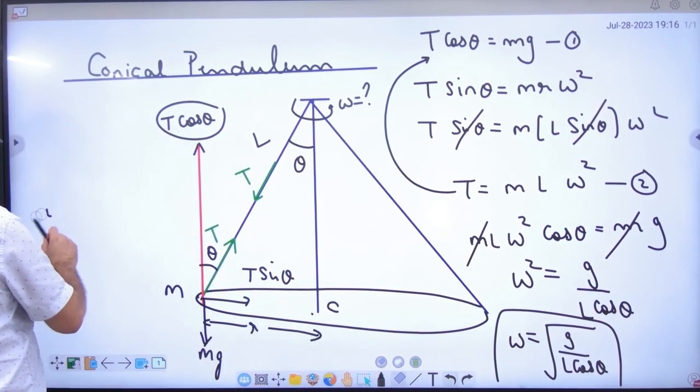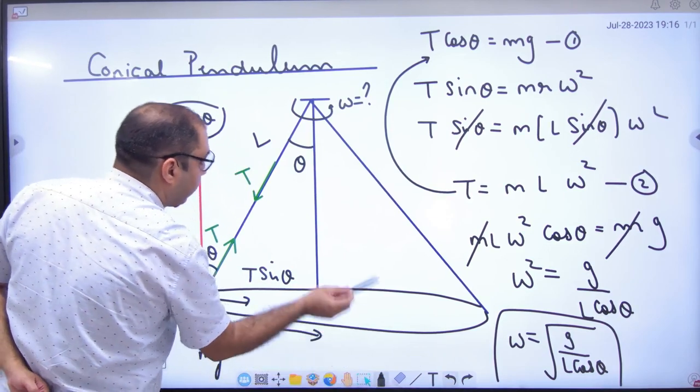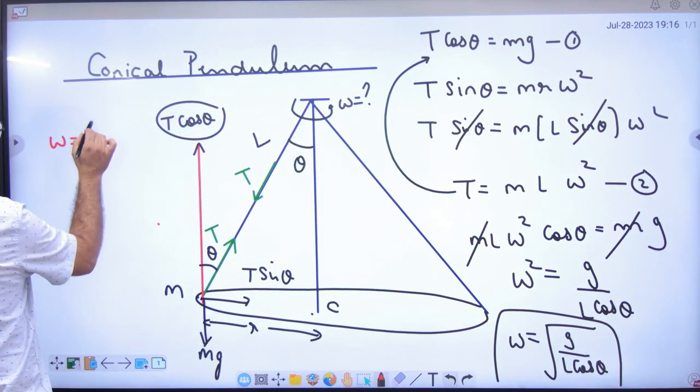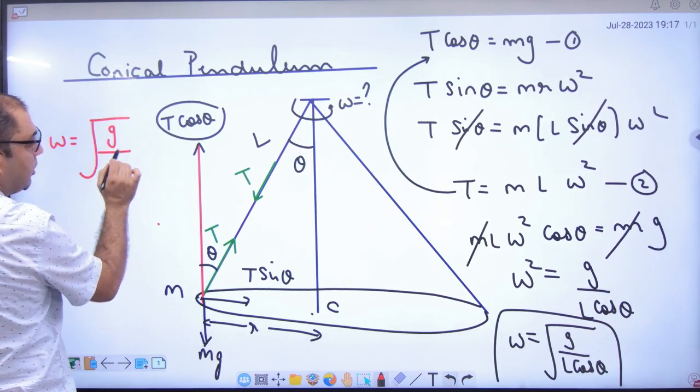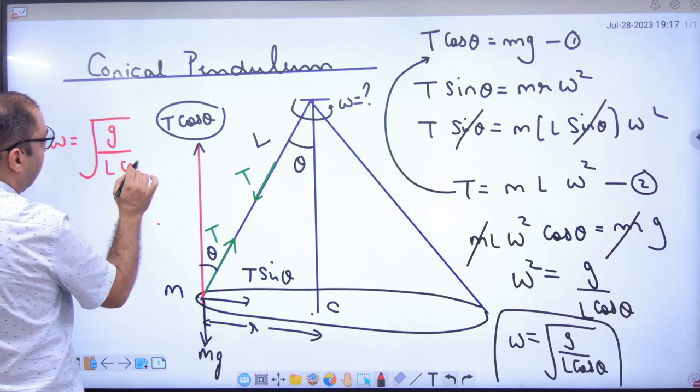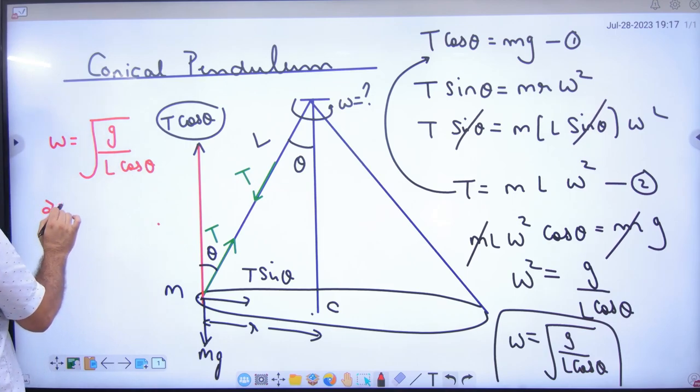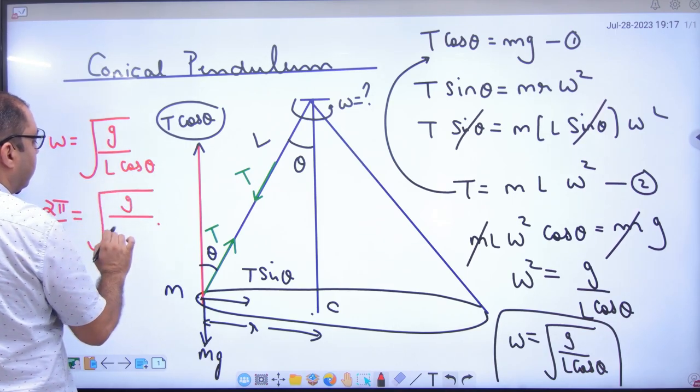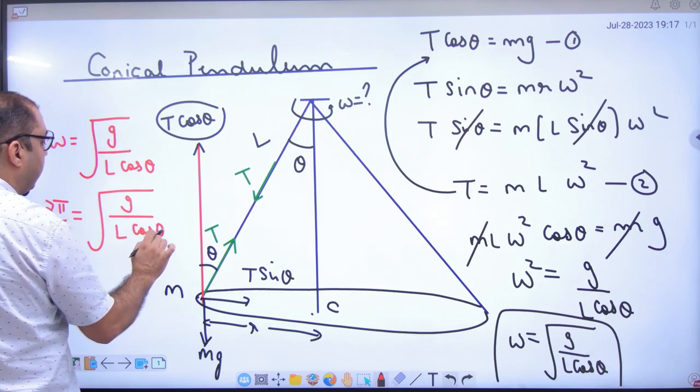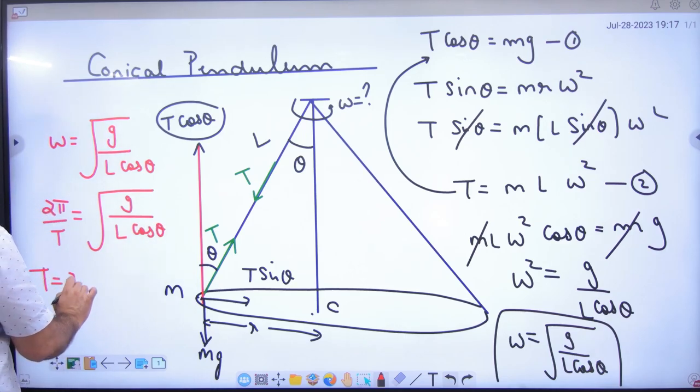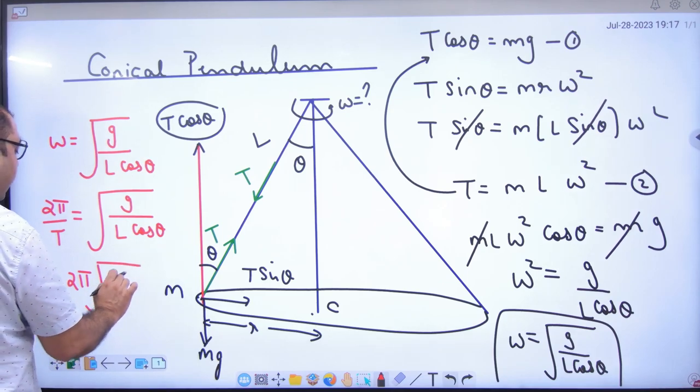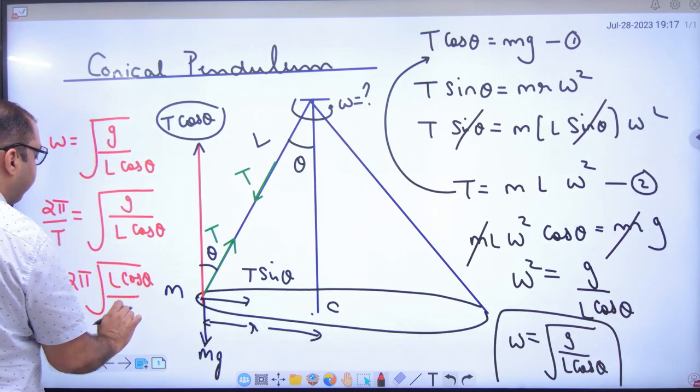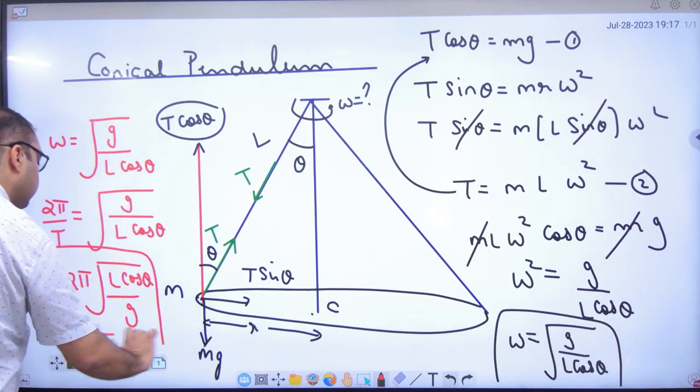He will also ask to find time period of this pendulum. Since omega equals root of g divided by L cos theta, and omega equals 2 pi by T, this equals under root g divided by L cos theta. Time period after cross multiply will be 2 pi under root L cos theta by g.